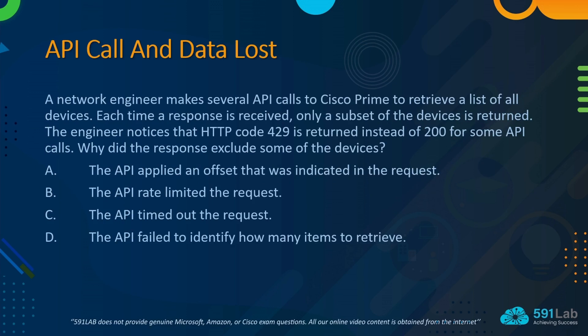Today's topic is API call and data loss. The question is: a network engineer makes several API calls to Cisco Prime to retrieve the list of all devices. Each time the response is received, only a subset of the devices is retained. The engineer noticed that HTTP code 429 is returned instead of 200 for some API calls. Why did the response exclude some of the devices? Option A: The API applied an offset that was indicated in the request. Option B: The API rate-limited the request. Option C: The API timed out the request. Option D: The API failed to identify how many items to retrieve.